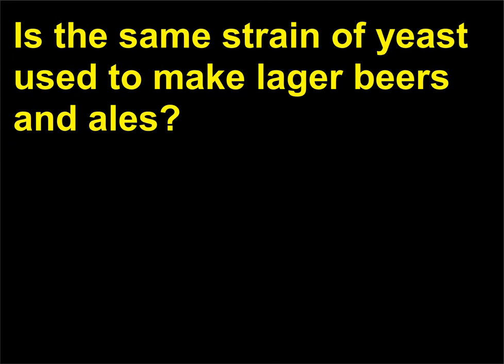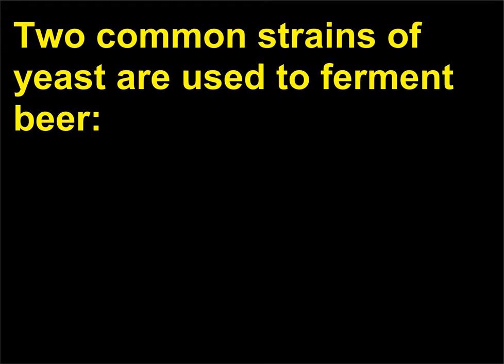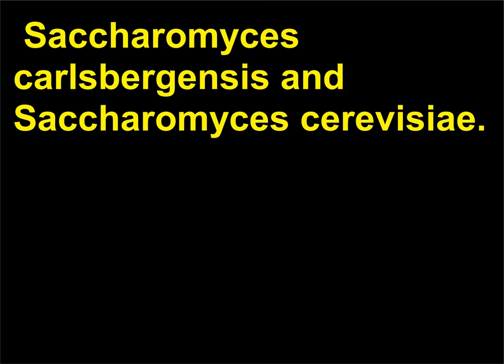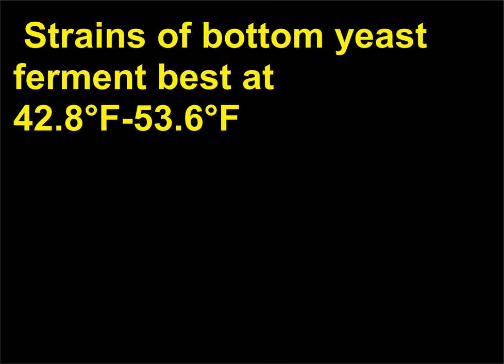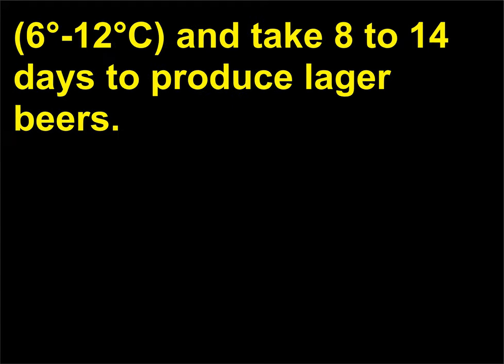Is the same strain of yeast used to make lager beers and ales? Two common strains of yeast are used to ferment beer: Saccharomyces carlsbergensis and Saccharomyces cerevisiae. Saccharomyces carlsbergensis, also known as bottom yeast, sinks to the bottom of the fermentation vat. Strains of bottom yeast ferment best at 42.8°F–53.6°F (6.6°C–12°C) and take 8 to 14 days to produce lager beers.